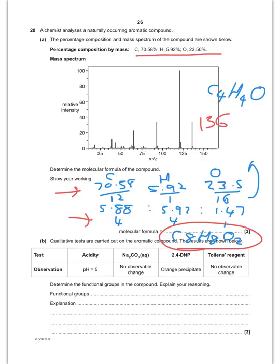Okay, qualitative tests are carried out on an aromatic compound, and the results are shown below. Determine the functional groups in the compound. Okay, this is quite interesting. So, it's slightly acidic, but does not react with sodium carbonate. So, you're looking at a phenol group there.